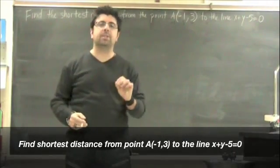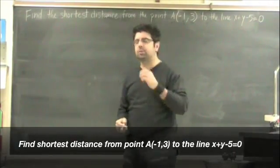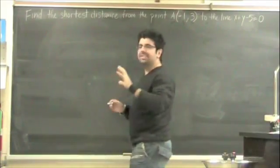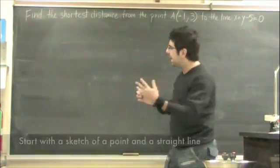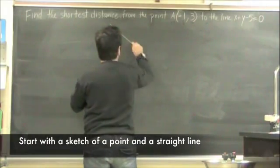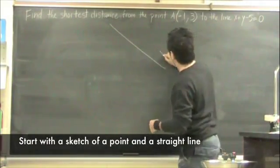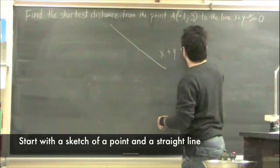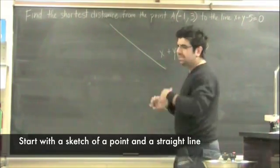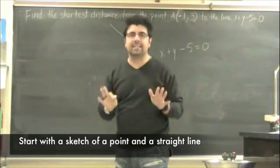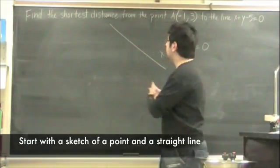One of the first steps that I usually recommend my students doing is drawing some kind of a diagram. What we have here is a line which is designated with the formula x plus y minus 5 equals 0. It doesn't need to be accurate, we're just drawing a sketch. From here, we need to plot some kind of a point, or point A.